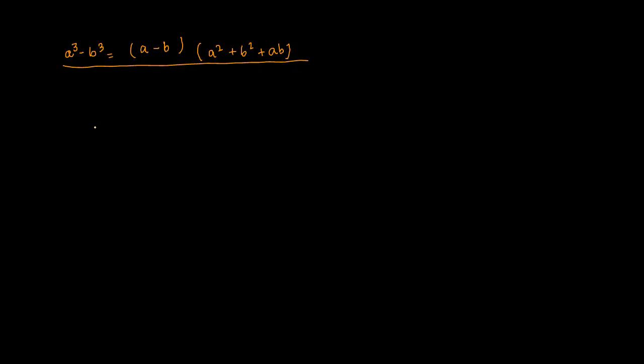Let us look at another algebraic identity: a³ - b³ = (a - b)(a² + b² + ab).